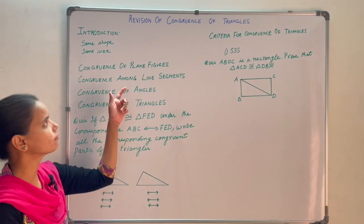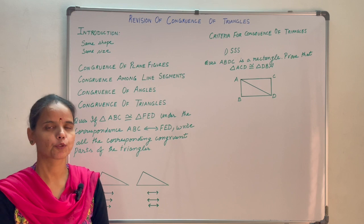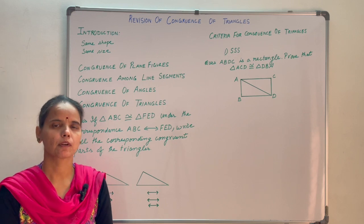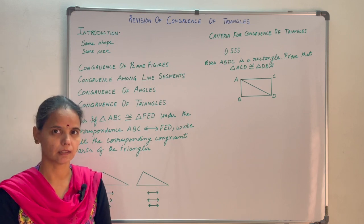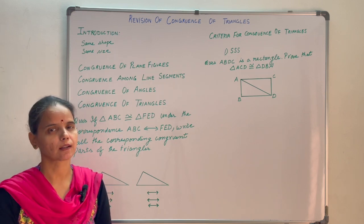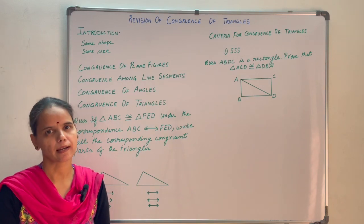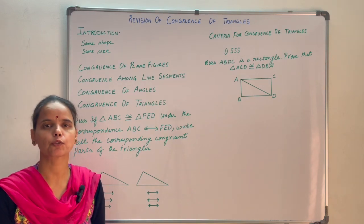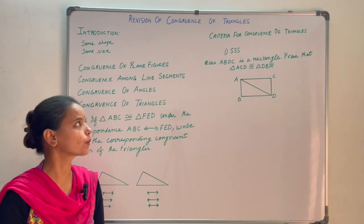Congruence of plane figures. If you superimpose one plane figure on the other, then it is going to exactly overlap. That means those two plane figures are congruent.